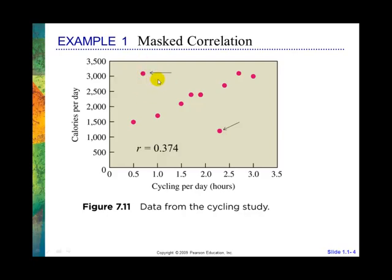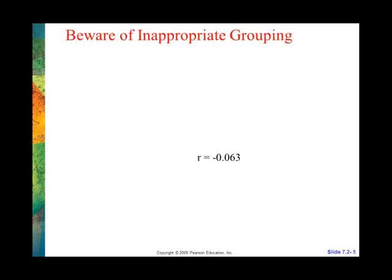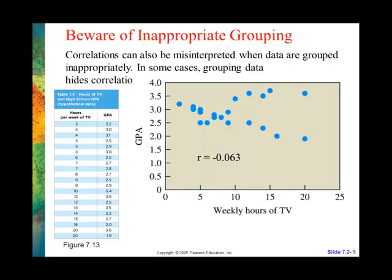And maybe this was supposed to be 3 hours instead of half an hour — she typed 30 minutes when she meant 3 hours, she put the 3 in the wrong spot. We don't know. So we can't just remove them, but we would test it to see what would happen. That's one thing — outliers that we have to look at.